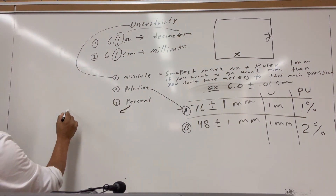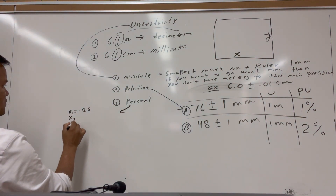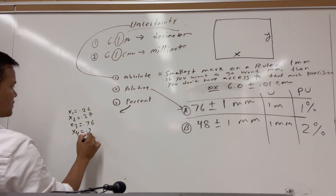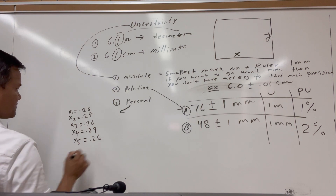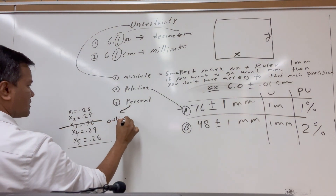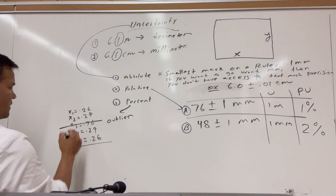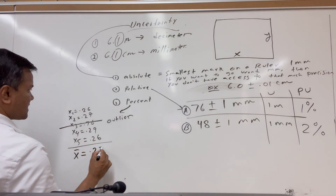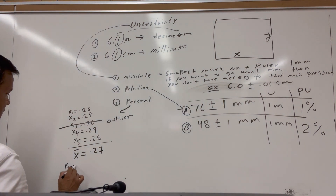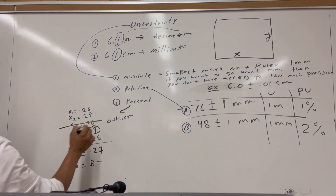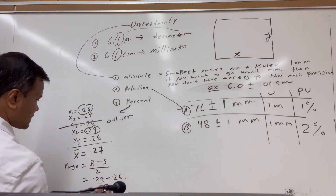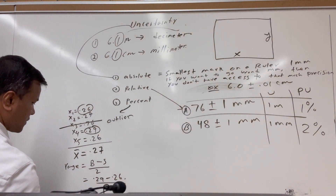Now let's work through a percent uncertainty example. Consider these data points: x1 = 0.26, x2 = 0.27, x3 = 0.76, x4 = 0.29, x5 = 0.26. Here x3 = 0.76 is our outlier — you want to remove the outlier. After removing it, the average is 0.27. Now we want to find the range: range equals the biggest value minus the smallest value, divided by 2. So 0.29 minus 0.26, divided by 2, gives 0.02.